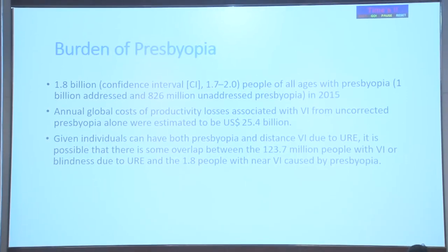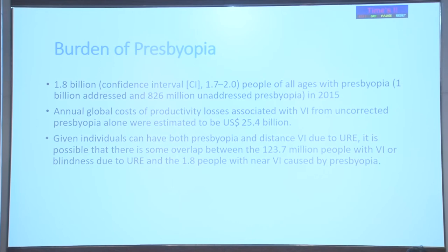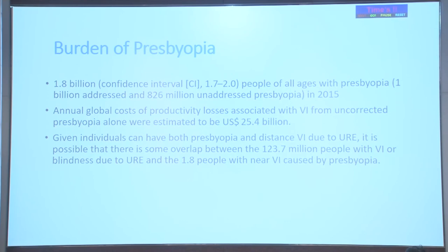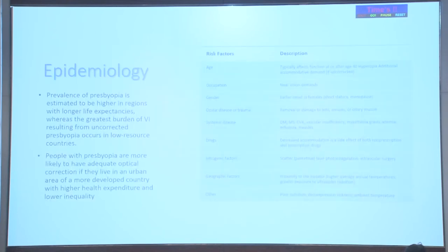The burden of presbyopia is huge. According to the World Report on Vision, around 1.8 billion people have presbyopia around the world, which is one-fourth of the total world population. It has a huge global productivity loss, and there is a projection that this problem will keep on rising with the aging population. Age is the most important risk factor, others being gender, occupation, drug use, and geographical areas.